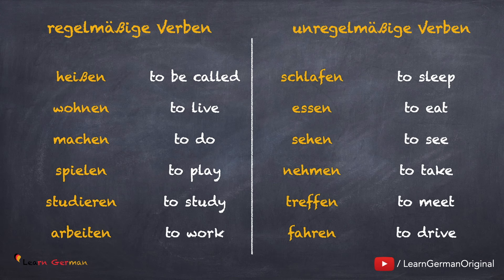Unregelmäßige Verben — irregular verbs: schlafen, essen, sehen, nehmen, treffen, fahren.